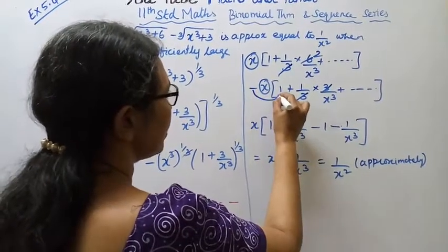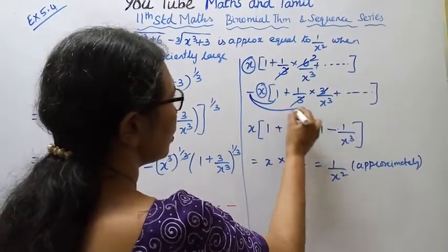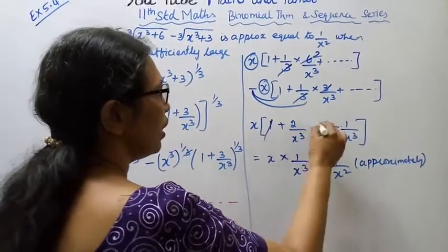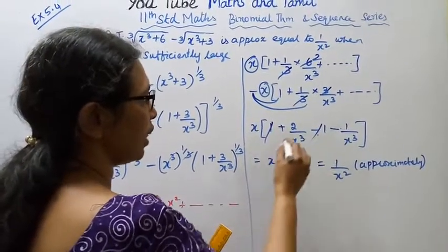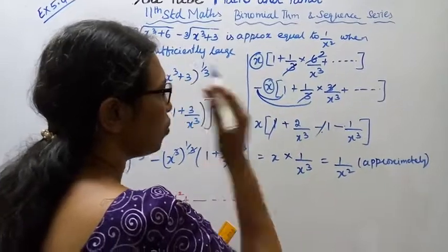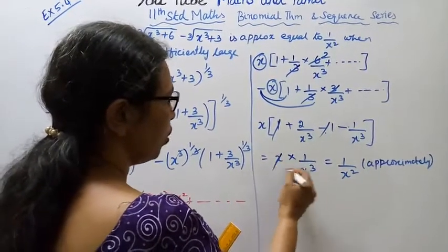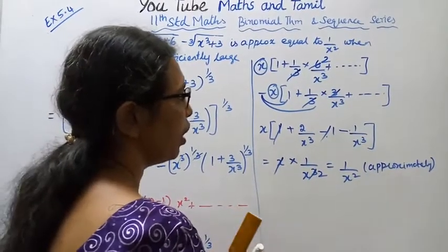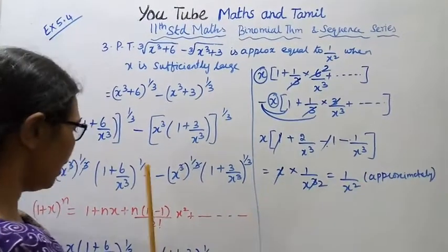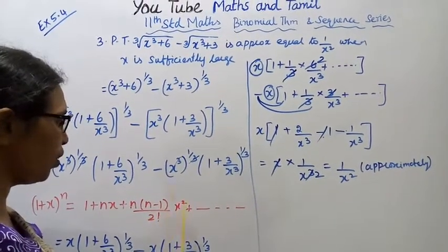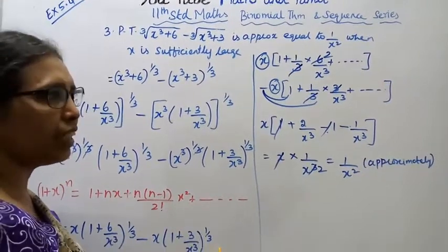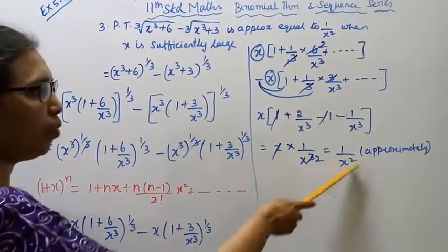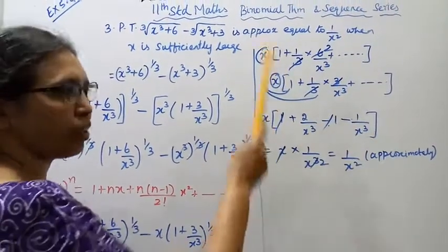After simplification, the minus terms and cancellations yield 2/x³ minus 1/x³, giving us 1/x². Therefore the answer is approximately 1/x², which is what we needed to prove.